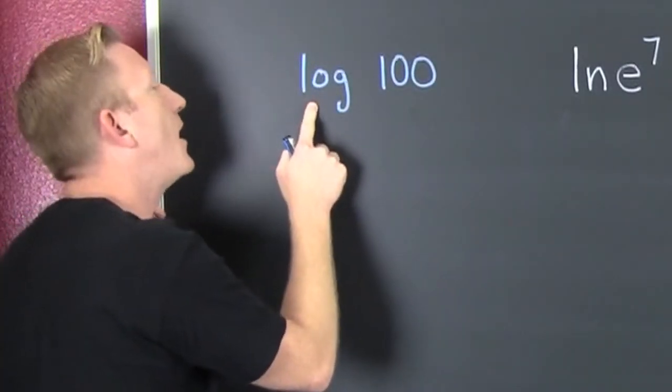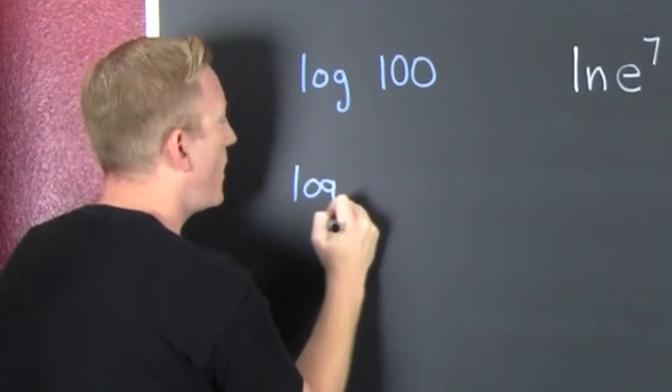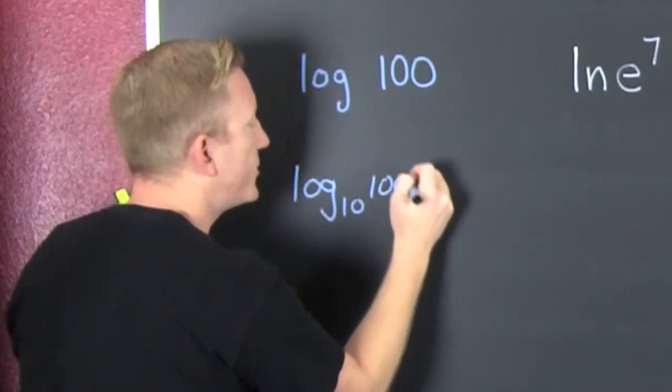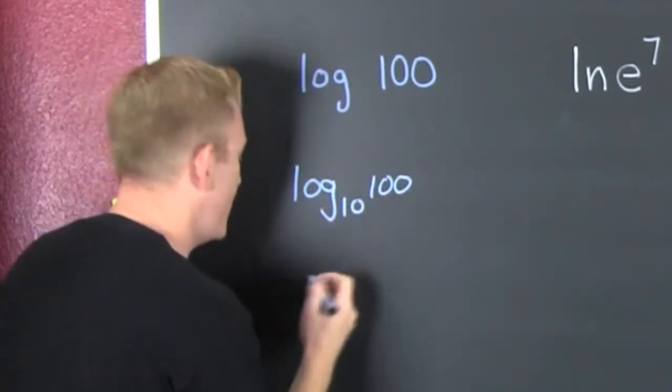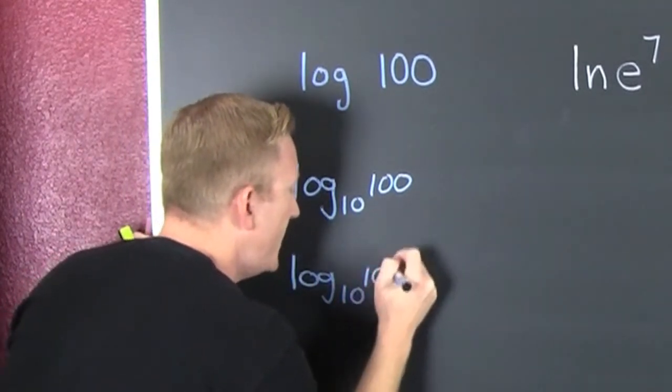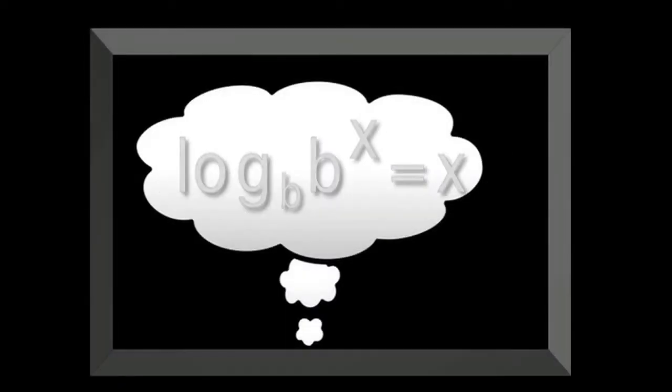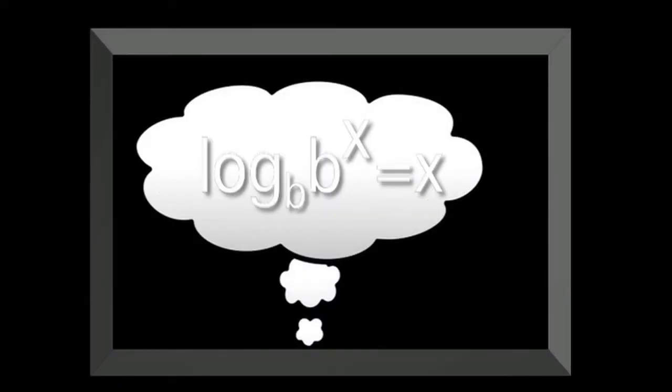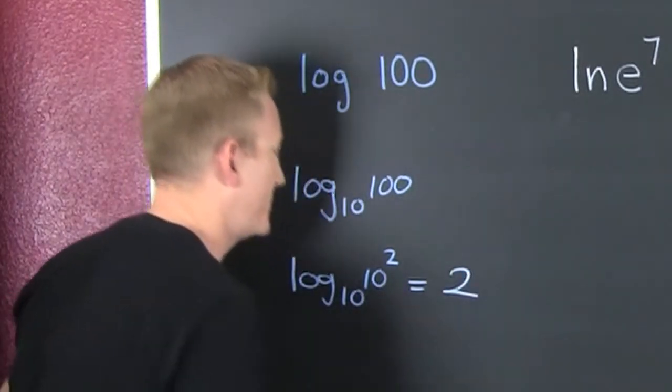We can rewrite the log of 100 as the log base 10 of 100, but we need to change that 100 so that the bases match: log base 10 of 10 to the 2. So what are we going to use? Log base b of b to the x is x, right? That is going to be a deuce.